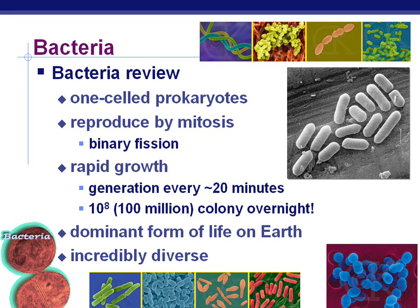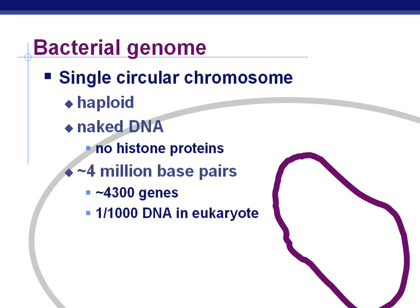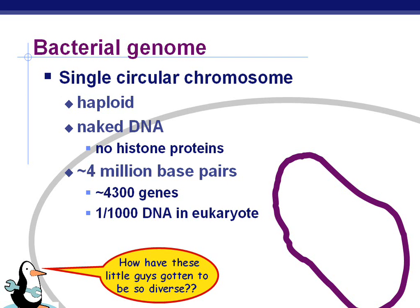Let's take a look at the bacterial genome. Remember that a genome is just all of the DNA of an organism. They have a single circular chromosome. They're haploid, and their DNA is naked — they don't have the histone proteins. They have just 4 million base pairs, about 4,300 genes — 1 in 1,000 DNA compared to eukaryotes. So how have they gotten so diverse when eukaryotes have 1,000 times more DNA and 10 times more genes? Remember about the introns, the spacers, and inefficiencies.